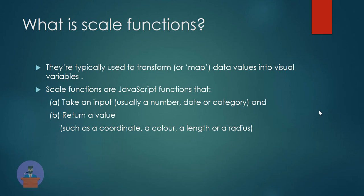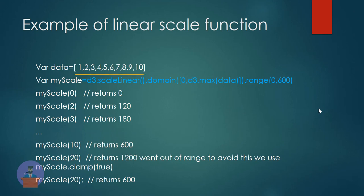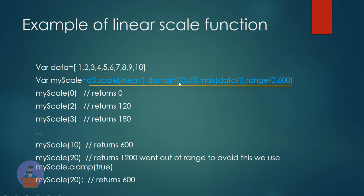So let's see an example of a scale function. Here you can see I have a number array from 1 to 10 and here I am defining one linear scale function. I have provided my domain from 0 to the max of data, which will be 10 — this defines my range of input. So right now it will be 0 to 10, and my range of output will be 0 to 600.